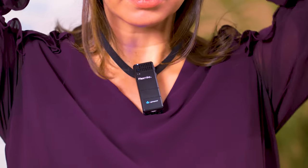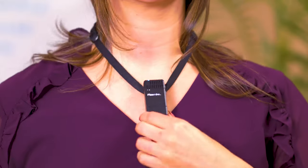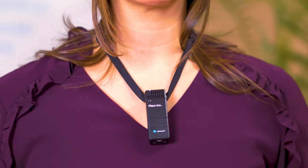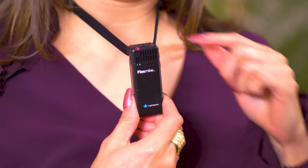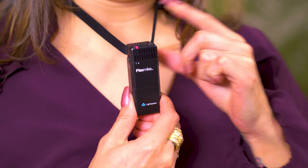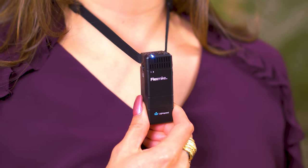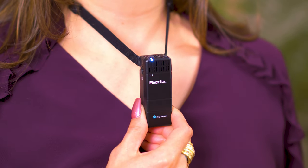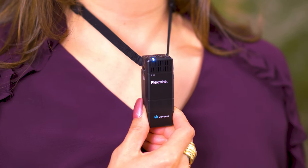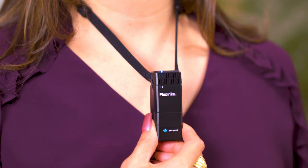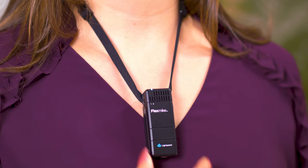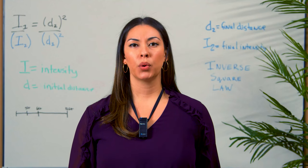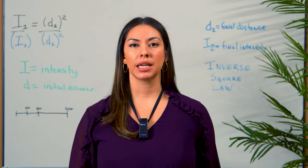When you have the FlexMic around your neck and positioned properly, go ahead and tap the power mute button. You'll notice the mic status light will turn blue indicating the audio is live. At this point you should hear your voice coming through the classroom speaker.